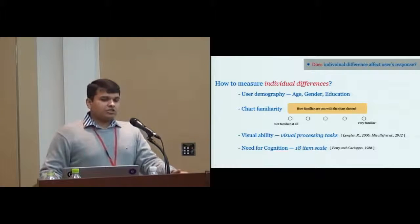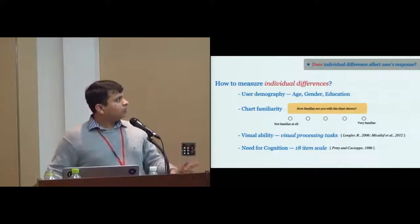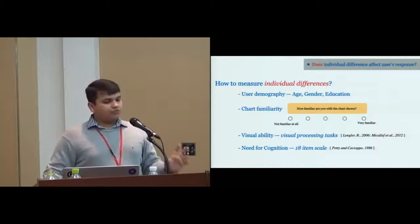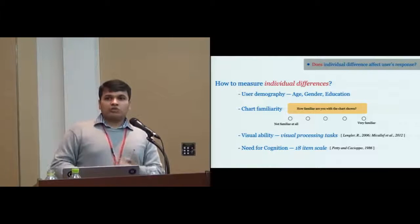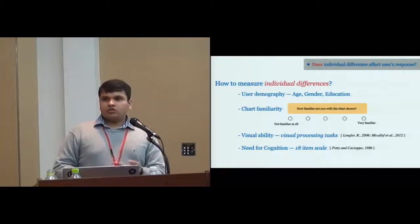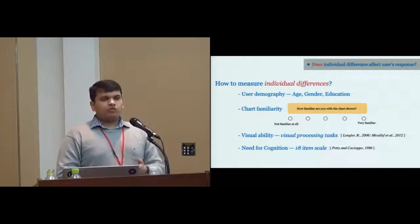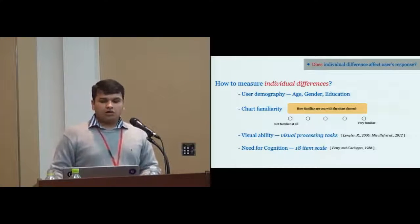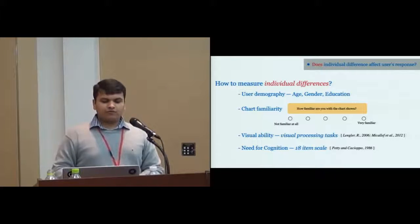To answer the third question about measuring individual differences, I'm not going into details because it's more involved, but we segmented individual differences into four broader sections: user demography information, users' familiarity with the shown chart, users' visual ability to process visual information, and need for cognition, a psychological concept proposed by Petty and Cacioppo. I encourage you to read the paper to know more about the individual differences component.